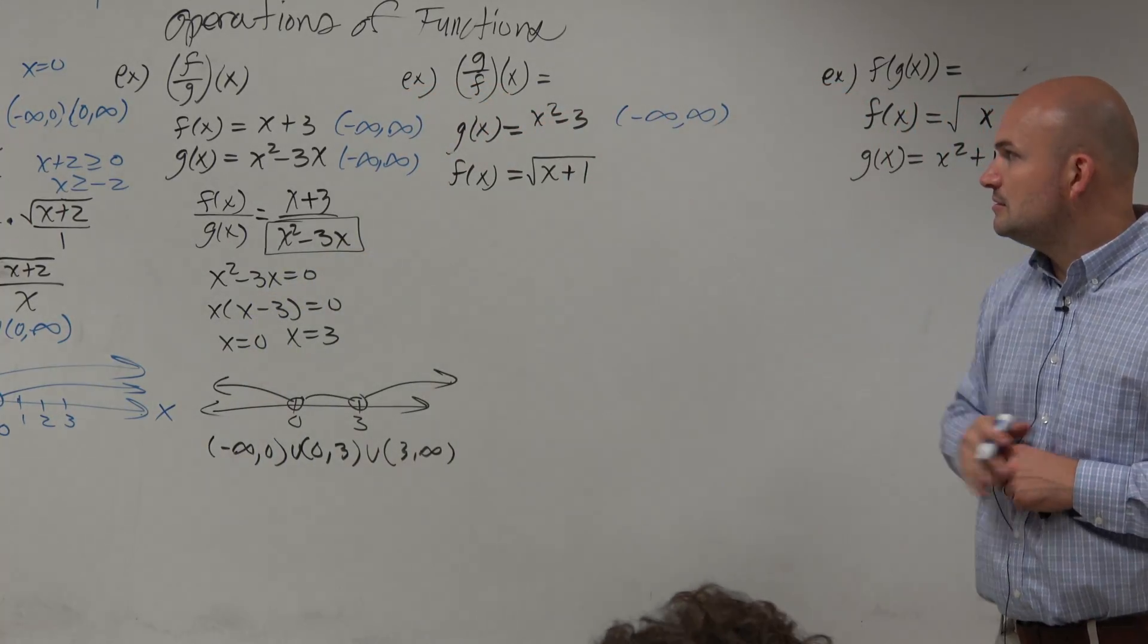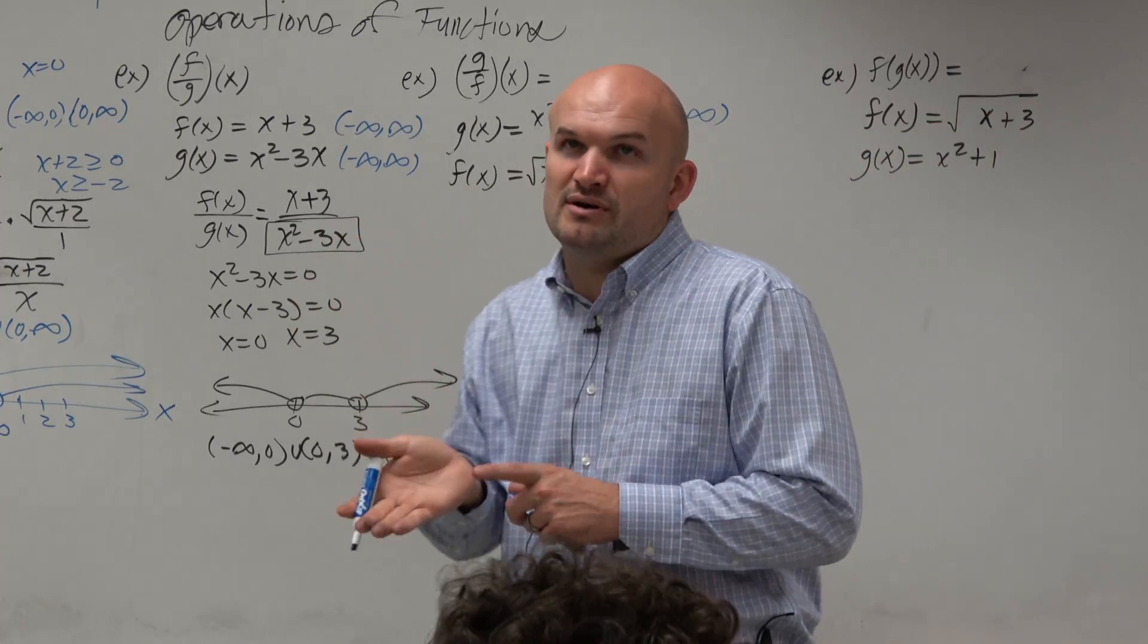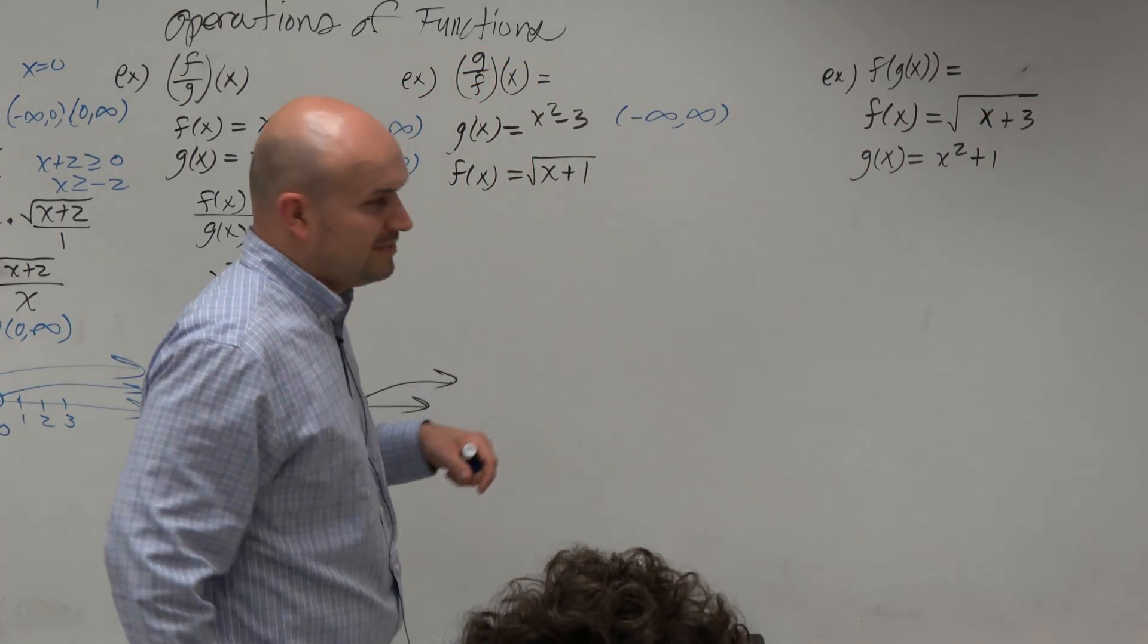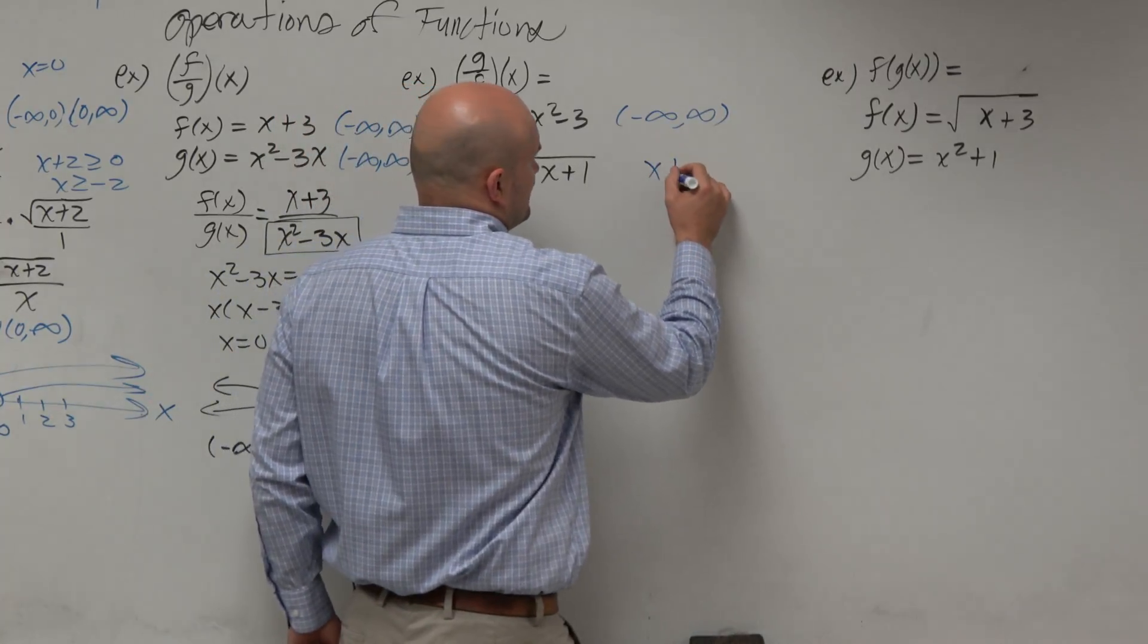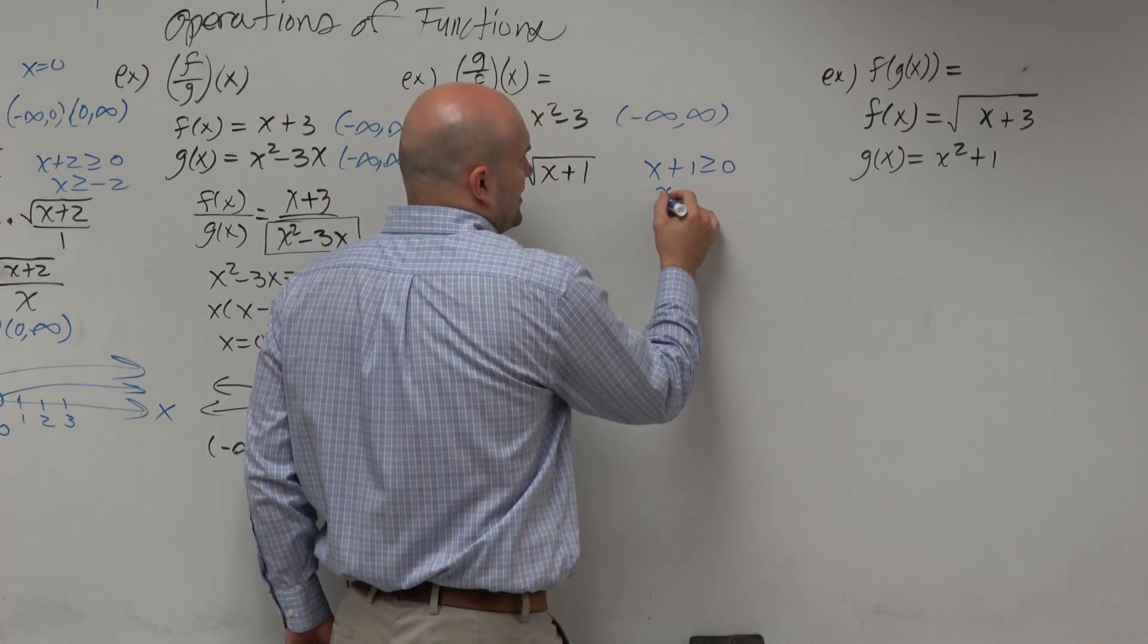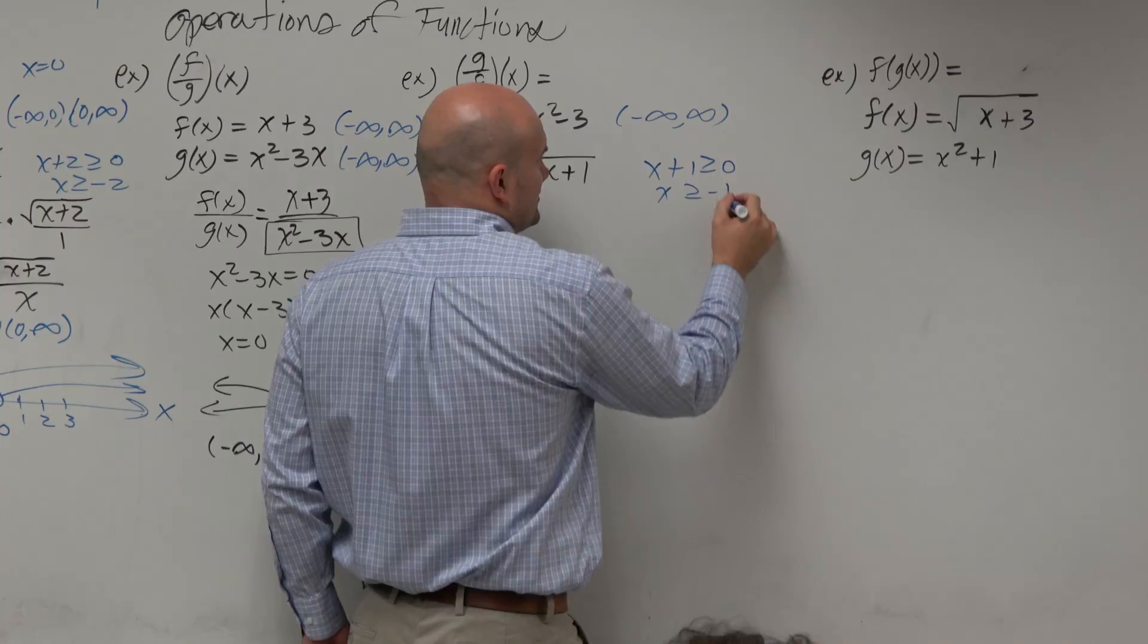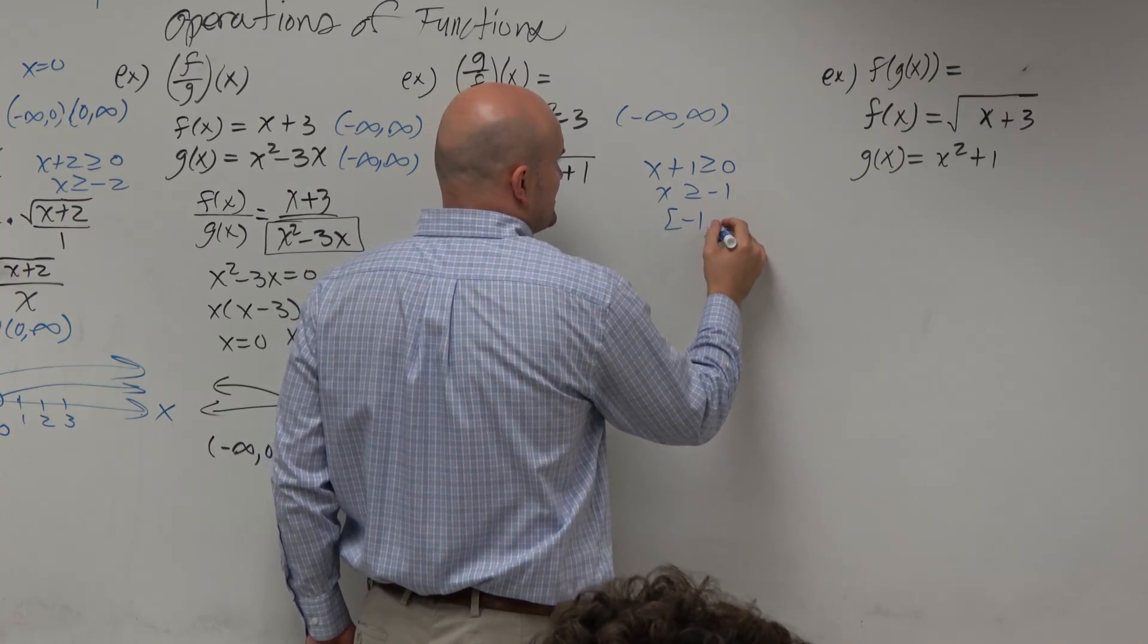What about this one? x plus 1, so therefore you can't take the square root of a negative number. I could do x plus 1 is greater than or equal to 0. And then hopefully you see that x has to be greater than or equal to negative 1, so therefore my domain is negative 1 to infinity.